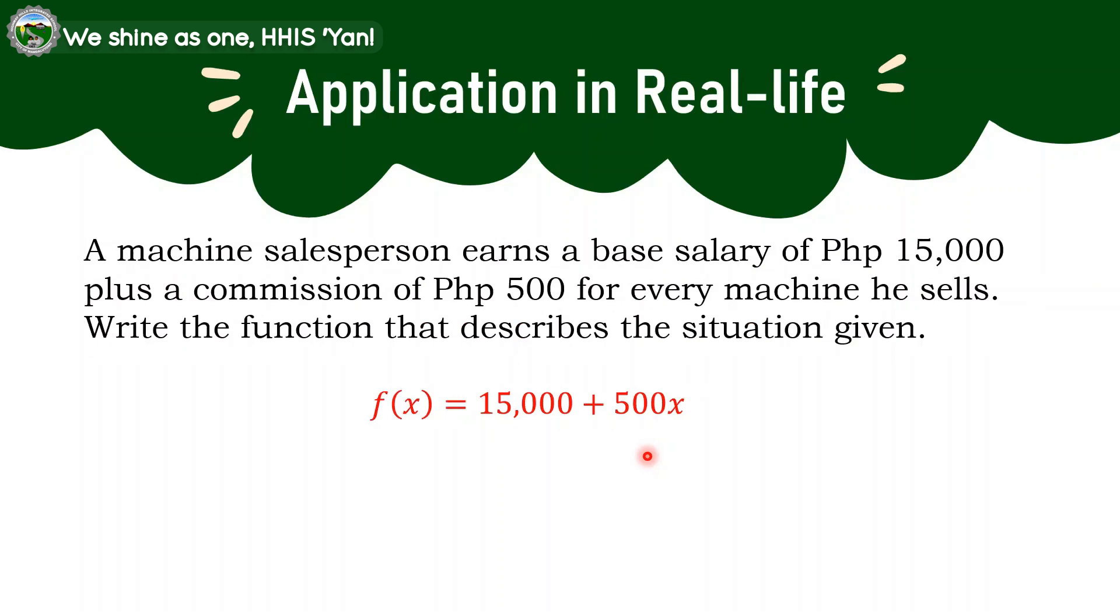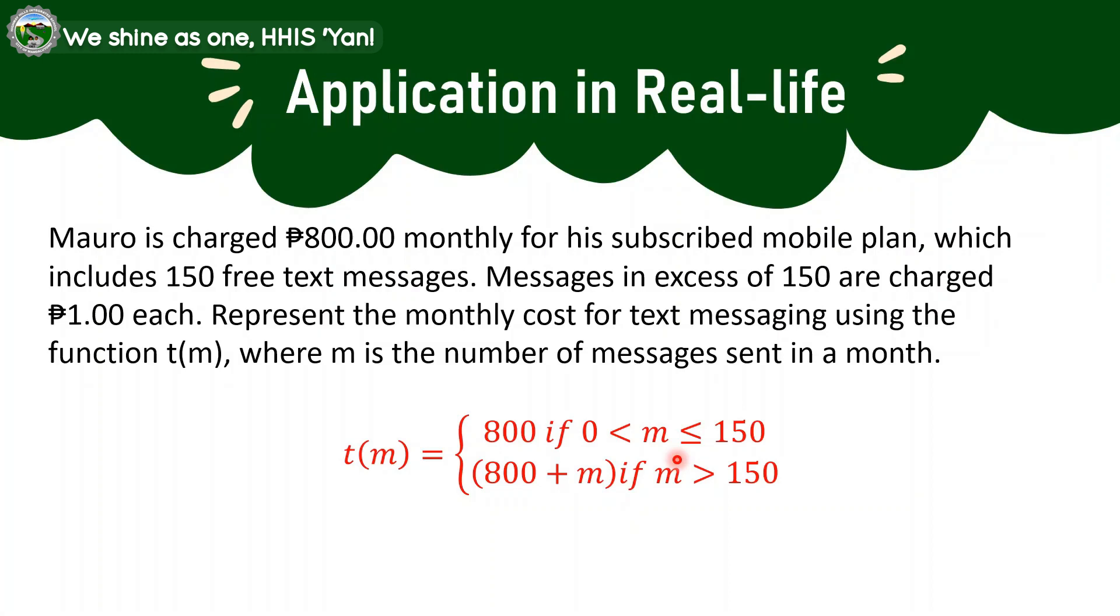A machine salesperson earns a base salary of 15,000 plus a commission of 500 for every machine he sells. Write the function that describes the situation given. So that is f(x) is equal to 15,000 plus 500x. Mauro is charged 800 pesos monthly for his subscribed mobile plan, which includes 150 pre-text messages. Messages in excess of 150 are charged 1 peso each. Represent the monthly cost for text messaging using the function T(M), where M is the number of messages sent in a month. So that is T(M) is equal to 800 if M is greater than 0 and less than or equal to 150. And then the second equation will be 800 plus M if M is greater than 150.